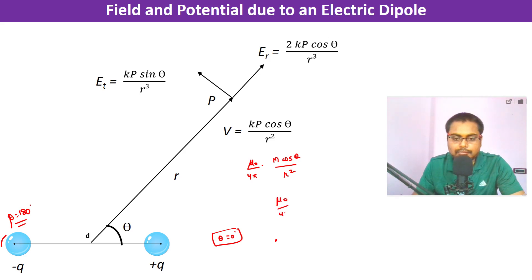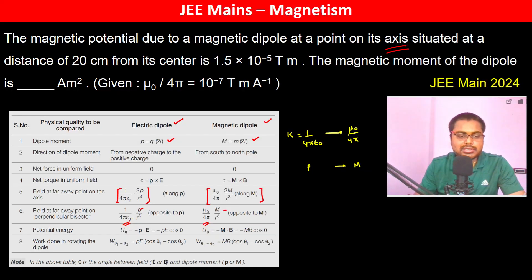We have μ₀ by 4π into m divided by r². The potential is given; we have to find out the magnetic moment.